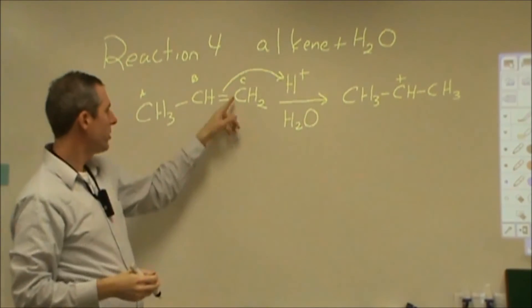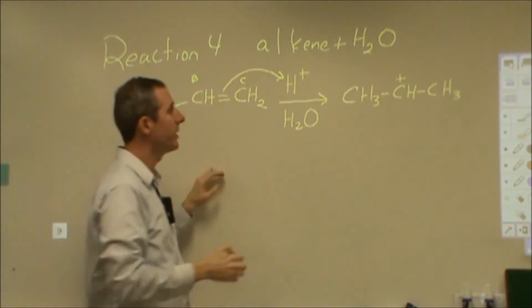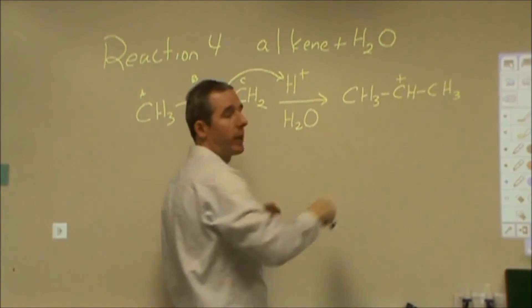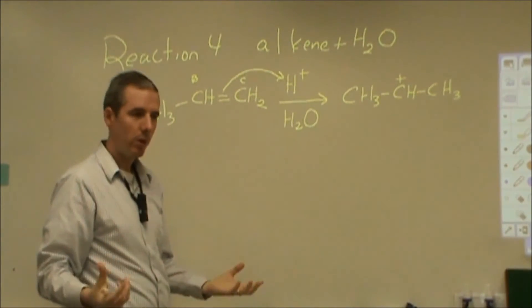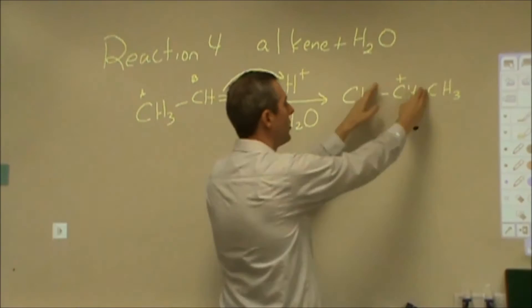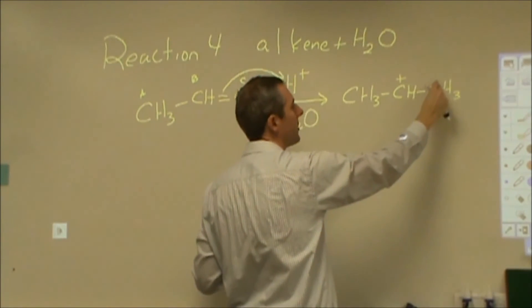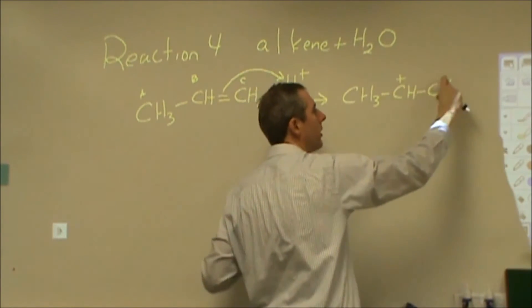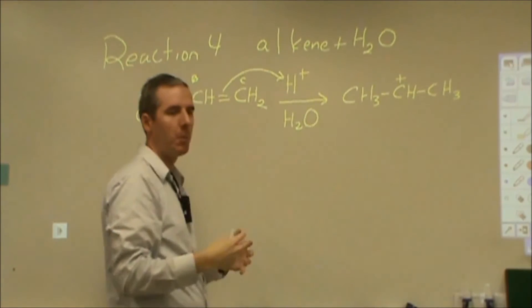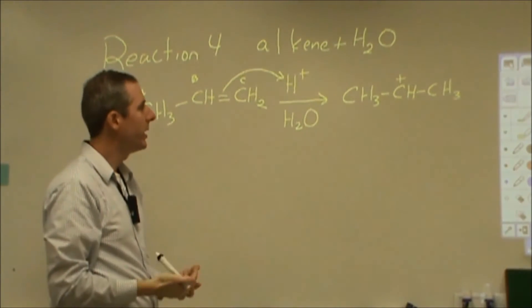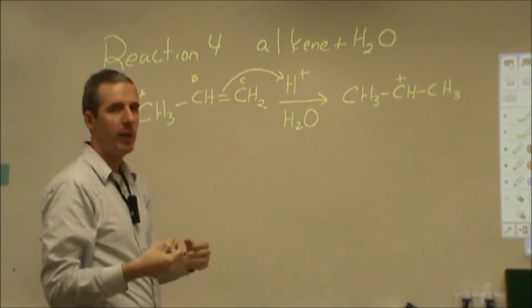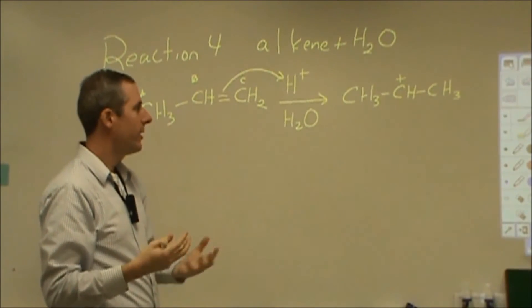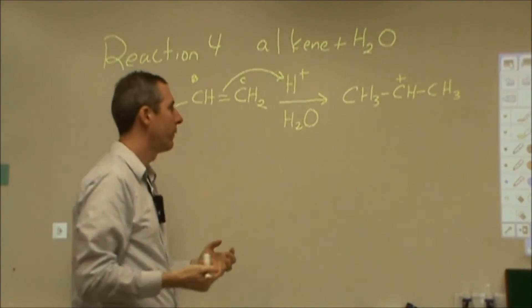The reason why it goes to C instead of B is because that gives us a carbocation on a secondary carbon, which has more electron density to draw from these two other carbons. If I localize the positive charge here, I only have one carbon to really pull electron density from to kind of help mitigate that very unstable intermediate. And the hydrogens are just not very helpful in that. They don't have enough electron density.